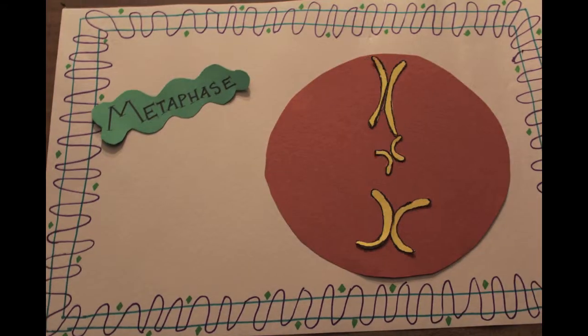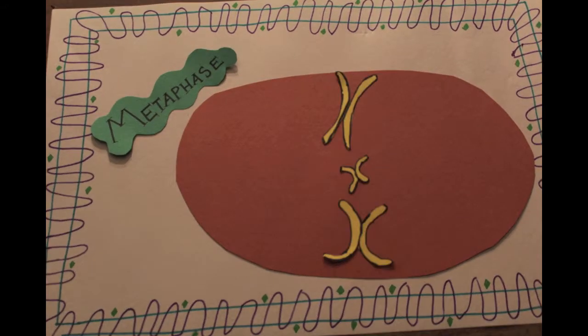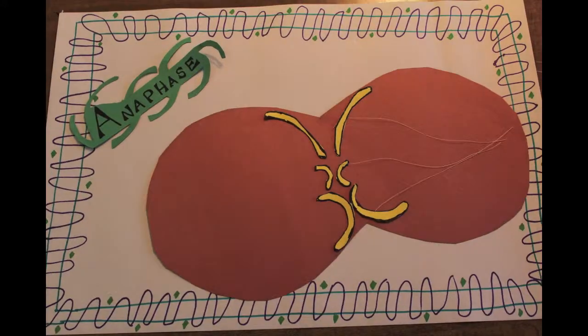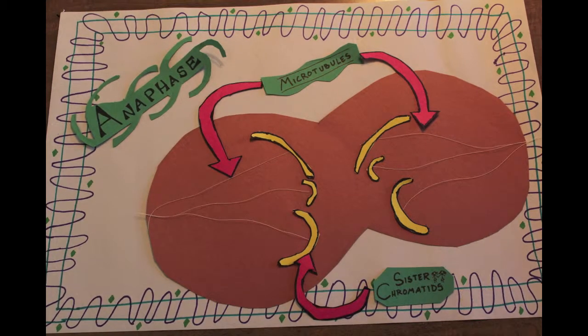During metaphase, the chromosomes line up along the midline of the cell, or the metaphase plate. During anaphase, microtubules form and begin to pull sister chromatids apart.